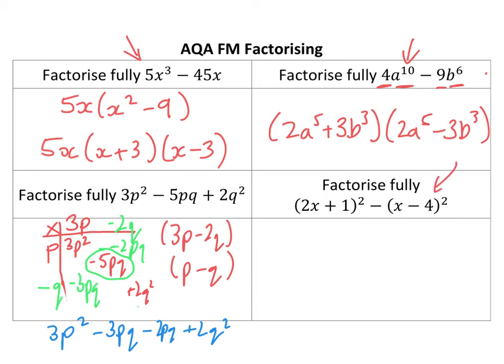Next one, this is again a difference of two squares. So what I'm going to do is it's 2x plus 1 plus x minus 4, so that should be minus 4 not plus, minus 4 there. And the other bracket would be 2x plus 1 minus x minus 4.